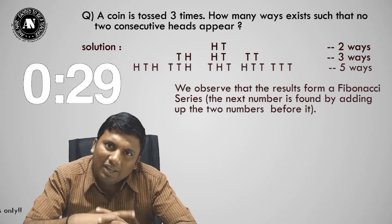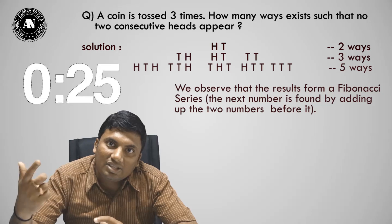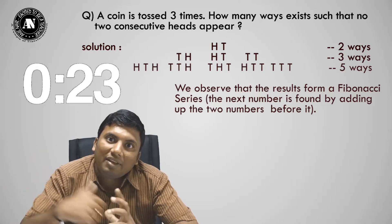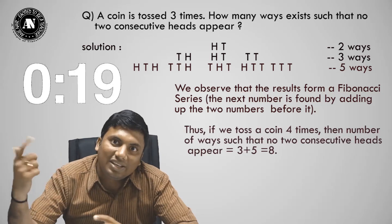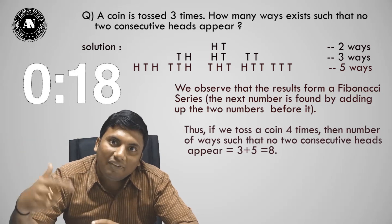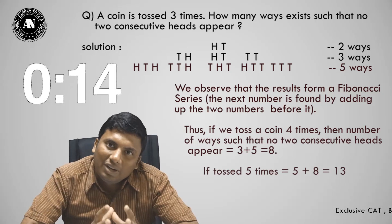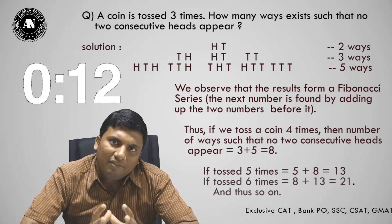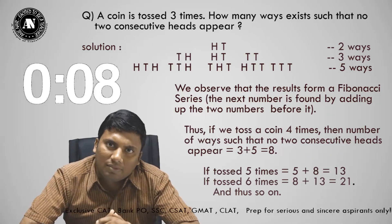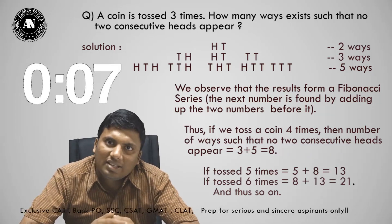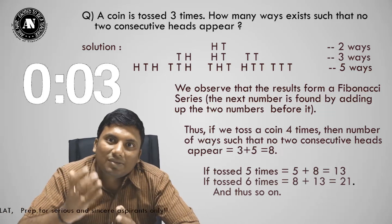This is a beautiful application of Fibonacci numbers. If I toss a coin three times, it is nothing but two plus three — five ways. If I toss a coin four times, it will be five plus three — eight. If I toss a coin five times, eight plus five — thirteen. This is how the Fibonacci series can be used to solve all kinds of coin problems where no two consecutive heads or no two consecutive tails will appear.